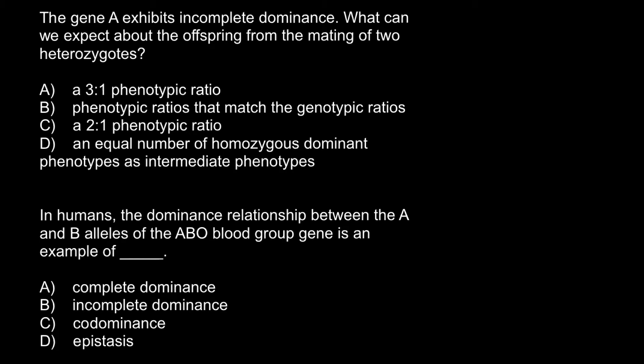The gene A exhibits incomplete dominance. What can we expect about the offspring from the mating of two heterozygotes? In incomplete dominance, we have two alleles. For example, let's take a trait like color of flowers. We may have dominant allele A and recessive allele a. The dominant allele A would code for the normal protein that produces red pigment, and the recessive allele a would be the same gene but defective, so the color of the petals would be white.